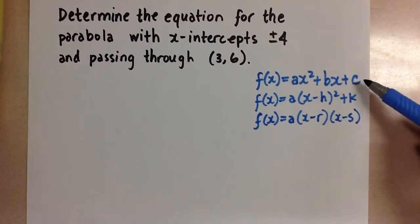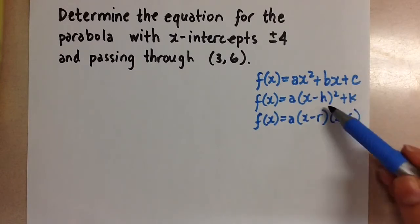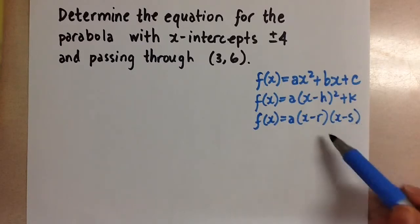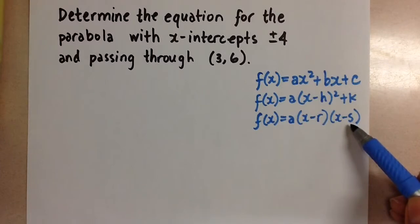The standard form, the c value, is the y-intercept for the parabola. In the vertex form, the h, k give you the coordinates of the vertex for the parabola. And in the factored form, the r and the s give you the two zeros of the parabola, or the x-intercepts.